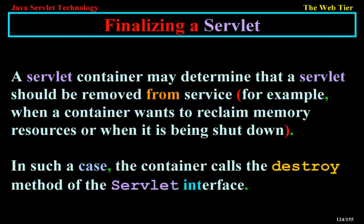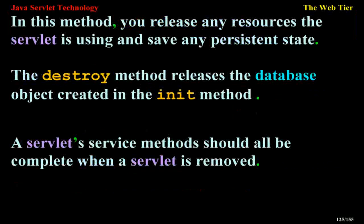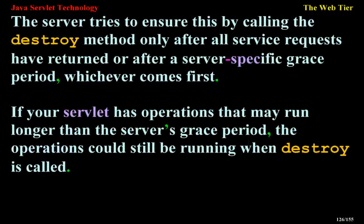Finalizing a servlet. A servlet container may determine that a servlet should be removed from service — for example, when a container wants to reclaim memory resources or when it is being shut down. In such a case, the container calls the destroy method of the servlet interface. In this method, you release any resources the servlet is using and save any persistent state. The destroy method releases the database object created in the init method. A servlet's service methods should all be complete when a servlet is removed. The server tries to ensure this by calling the destroy method only after all service requests have returned or after a server-specific grace period, whichever comes first. If your servlet has operations that may run longer than the server's grace period, the operations could still be running when destroy is called.